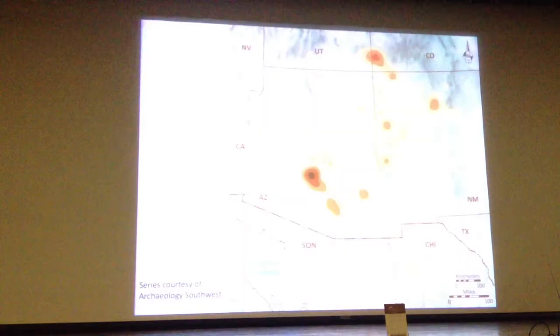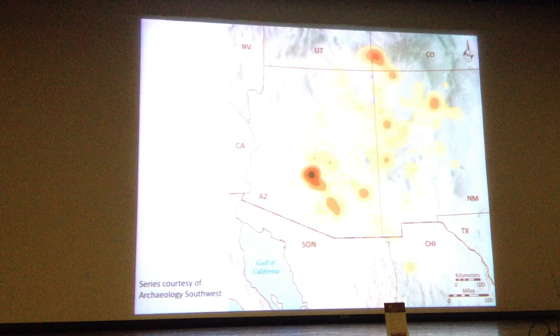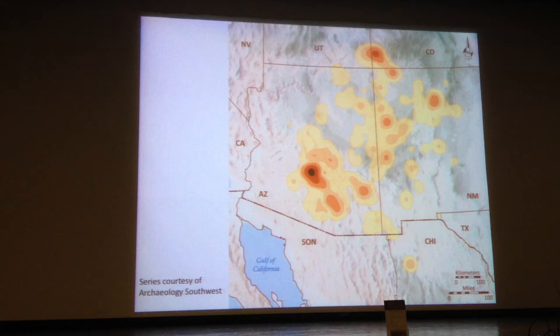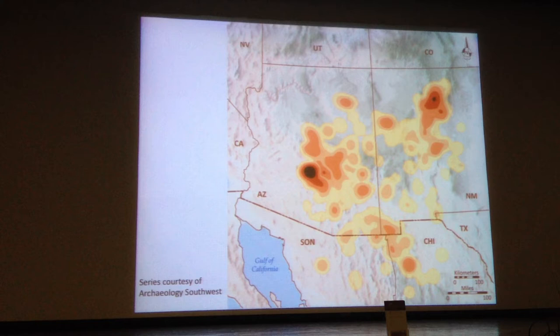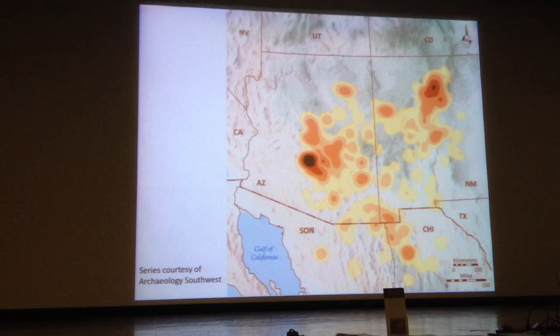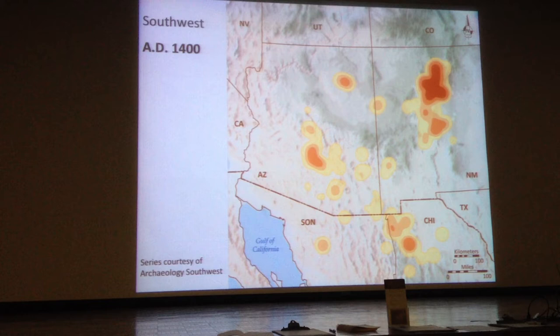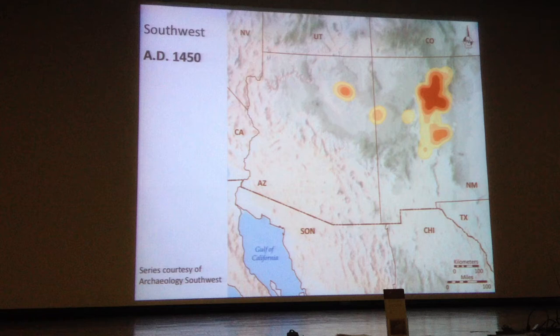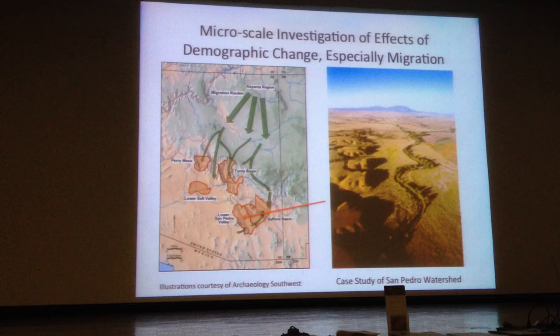Before getting into results, I want to show graphics that Phil Doyle and folks at Archaeology Southwest did, to make sure everyone has the demographic changes in mind. Here's 1200 to 1250, then 1250, and then 1300 — you can see that major change with the depopulation of the Four Corners, then the coalescence especially in the Hohokam area, the disarticulation of the North and the South, and the apparent disappearance of people in the South.